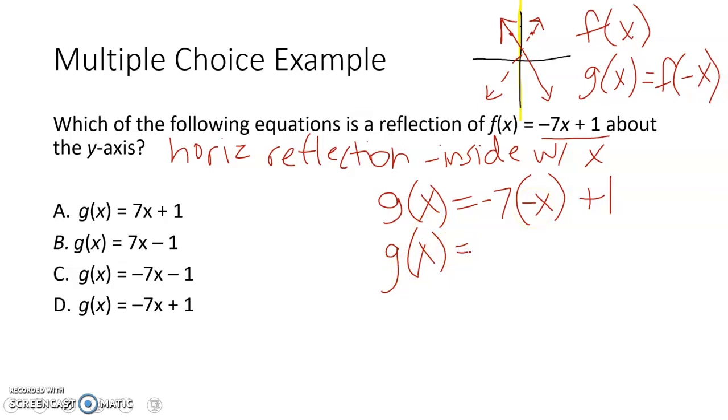negative 7 times negative x is positive 7x plus 1, which matches along with what we were thinking here, where if we reflect it over, it's just going the other direction. It looks like its slope has just changed. It went from a negative slope line to a positive slope line.